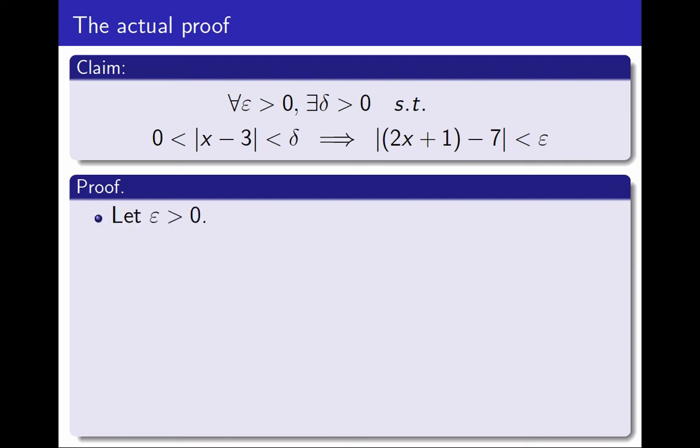As we said, first I fix an arbitrary value of ε, let ε be greater than 0, and then I'm going to take δ to be ε over 2. How do I know this? Because of the rough work I did before. Then I fix a generic value of x, real number, and I assume that the distance between x and 3 is between 0 and δ.